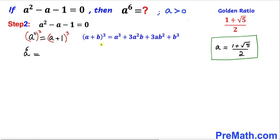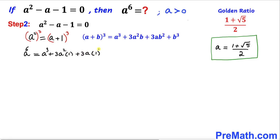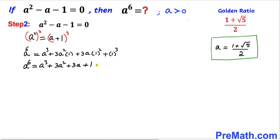On the right-hand side, we apply the cubic identity (a + b)³. Calling a as 'a' and b as 1, the right-hand side expands to a³ + 3a²·1 + 3a·1² + 1³. Let's call this equation number 1.